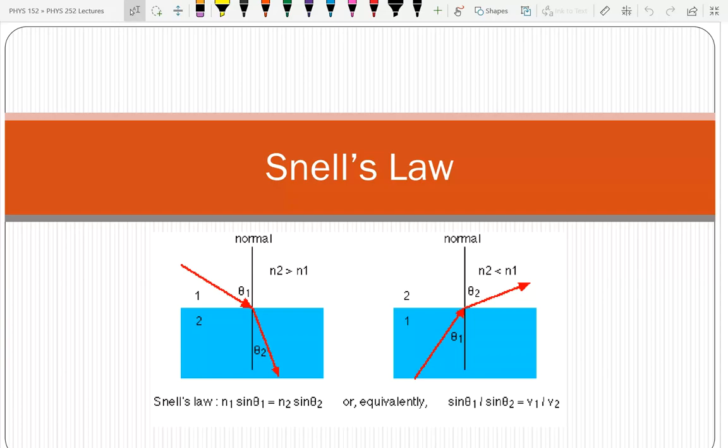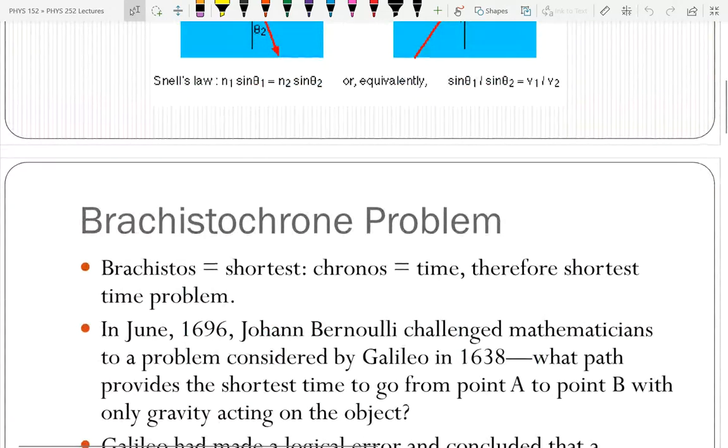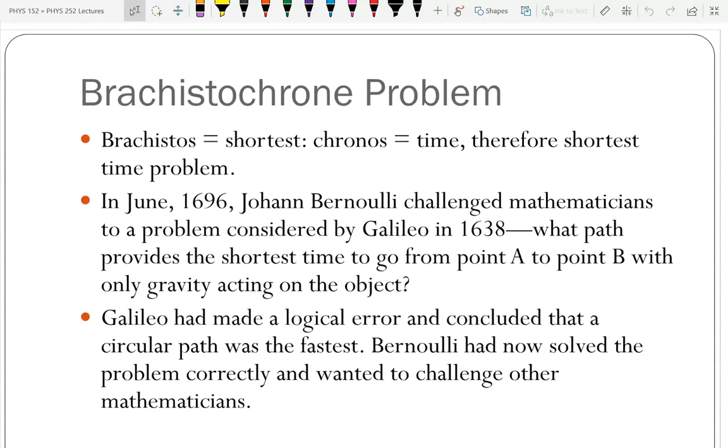We start with the Brachistochrone problem. The words brachistos means the shortest, chronos is time, so it's the shortest time problem. There is one famous book on the Brachistochrone problem.